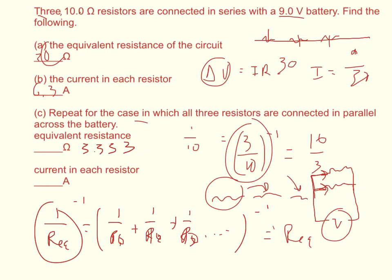But in parallel, the voltage going to each resistor is always the same. The change in voltage is always the same across each resistor. So delta V equals the current going through that one times that particular resistor, not the equivalent resistance. So you take that particular resistor, 10 ohms, and do voltage over 10, which is 9 over 10, equals 0.9 amps.